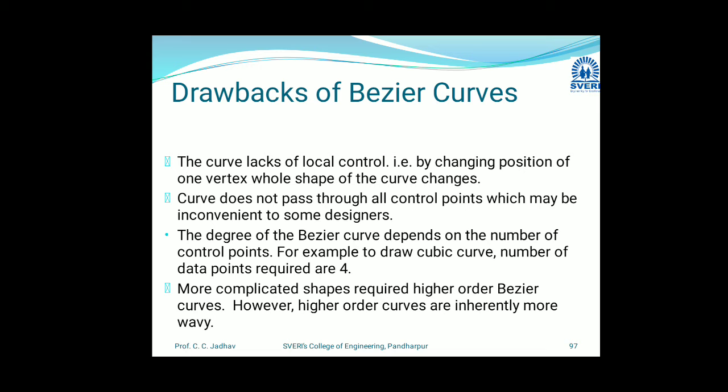Drawbacks of the Bezier curve: The curve lacks local control. As compared to Hermite curves, local control is not possible — by changing the position of one vertex, the whole shape can be changed. If we pick any one control point in between and make a small position change, it leads to changing the whole shape of the curve. Also, the curve does not pass through all control points, which may be inconvenient for designers.